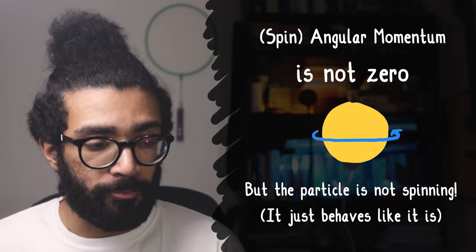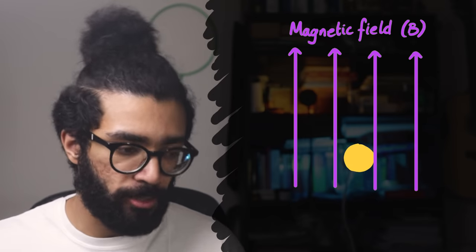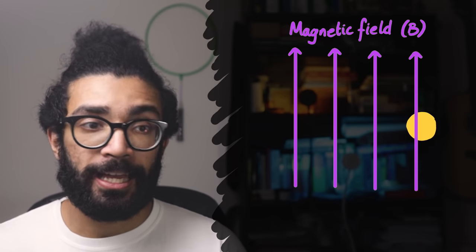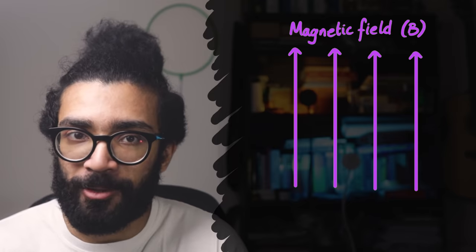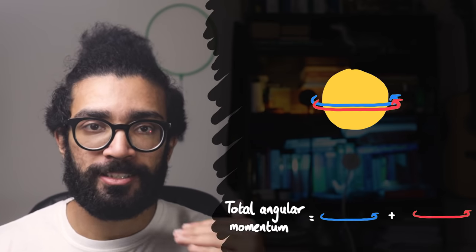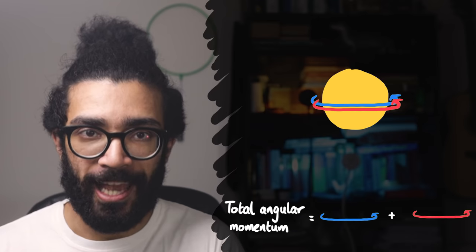When particles have angular momentum, they behave in a very particular way, for example in a magnetic field, and these particles seem to behave that way. And any angular momentum that they gain from actually moving along a curved path, or orbiting some other object, is on top of the inherent spin angular momentum that they already have.